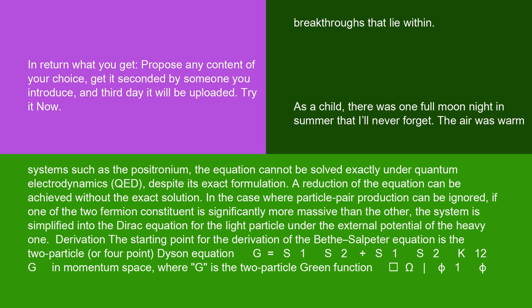In the case where particle pair production can be ignored, if one of the two fermion constituent is significantly more massive than the other, the system is simplified into the Dirac equation for the light particle under the external potential of the heavy one.